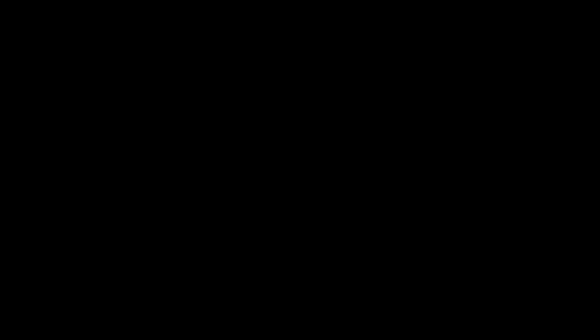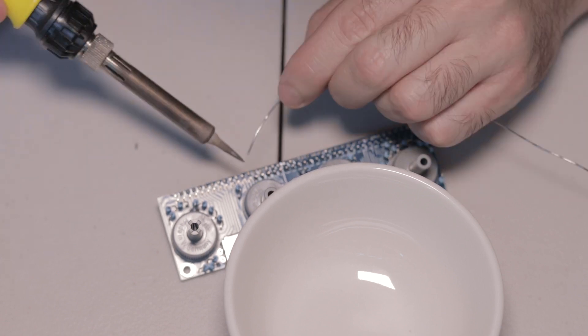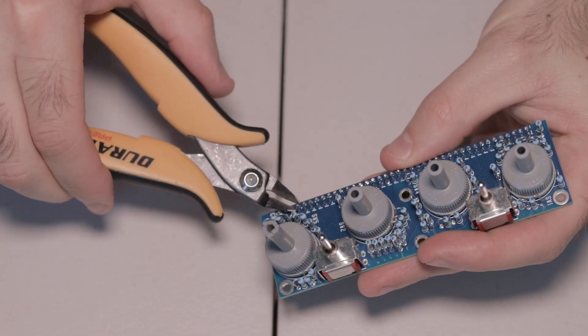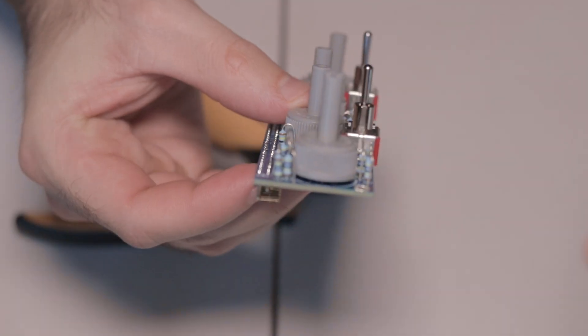And then you can access the second row of pins a little easier, and solder the second row in place, and then cut those pins flush to the board as well. And that's it for the switches board.